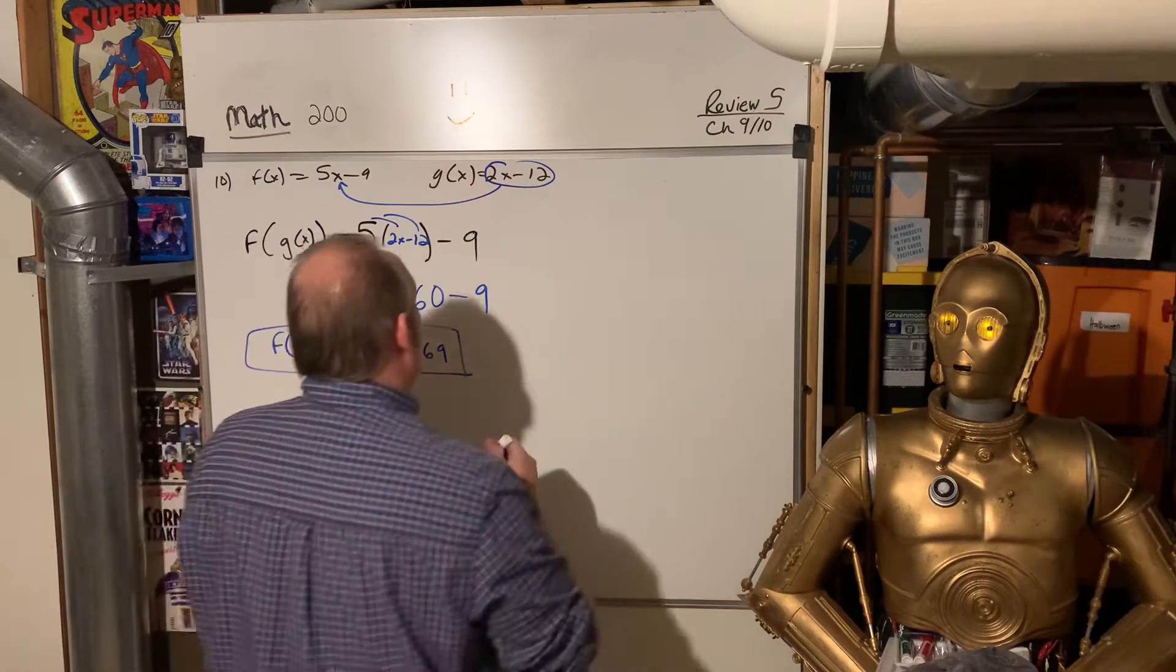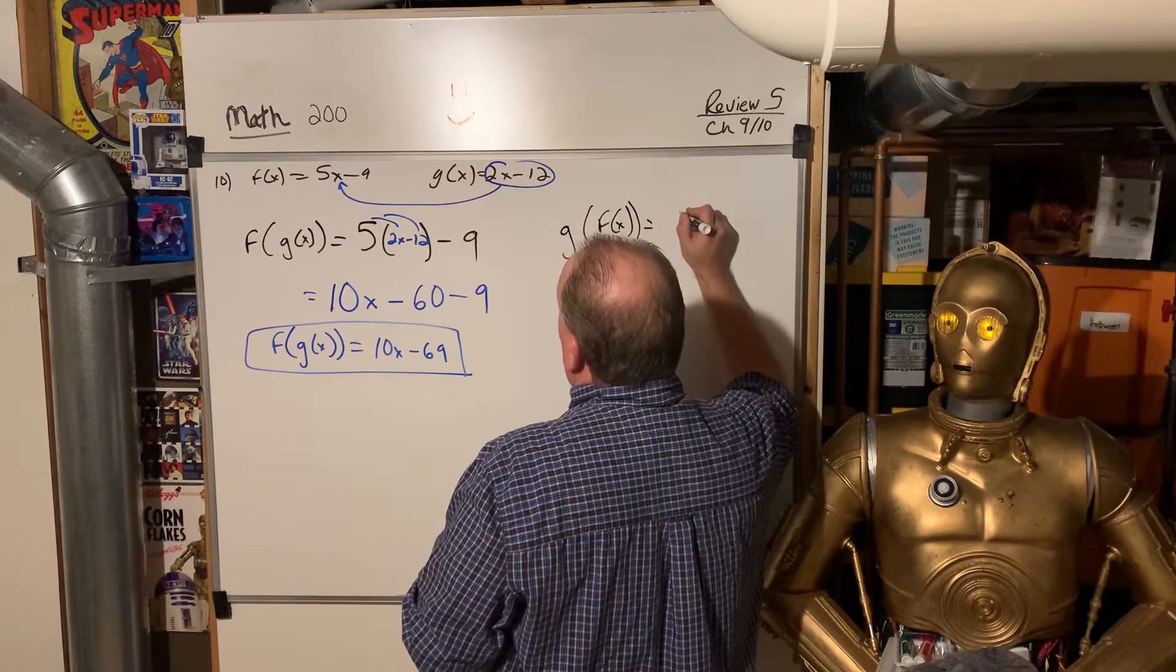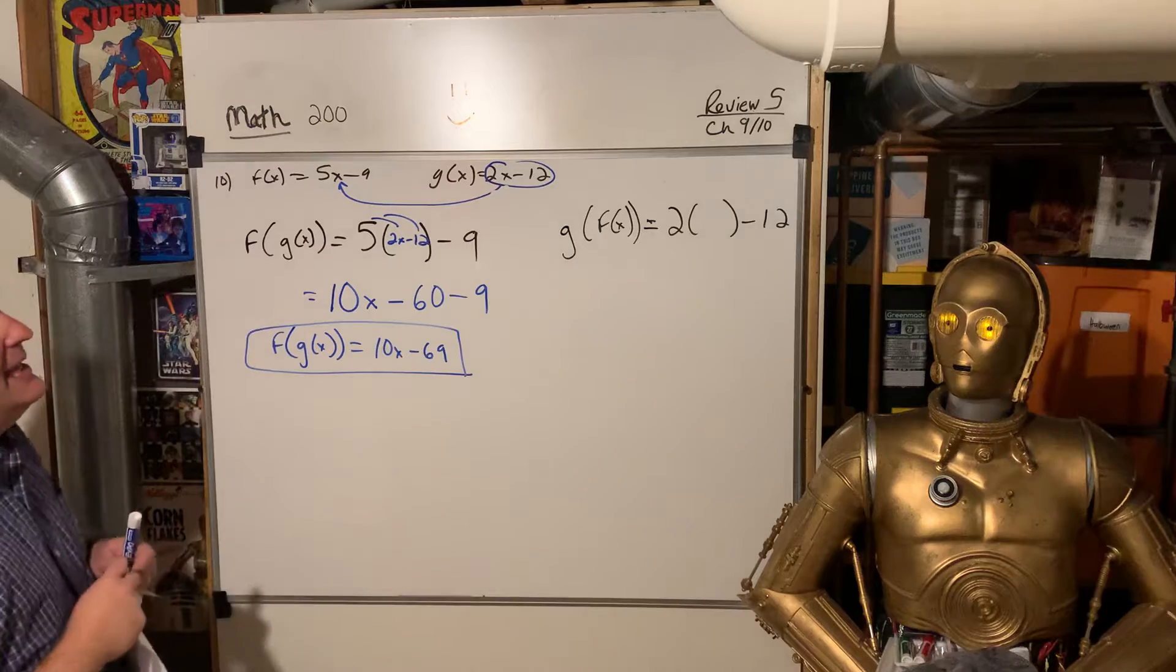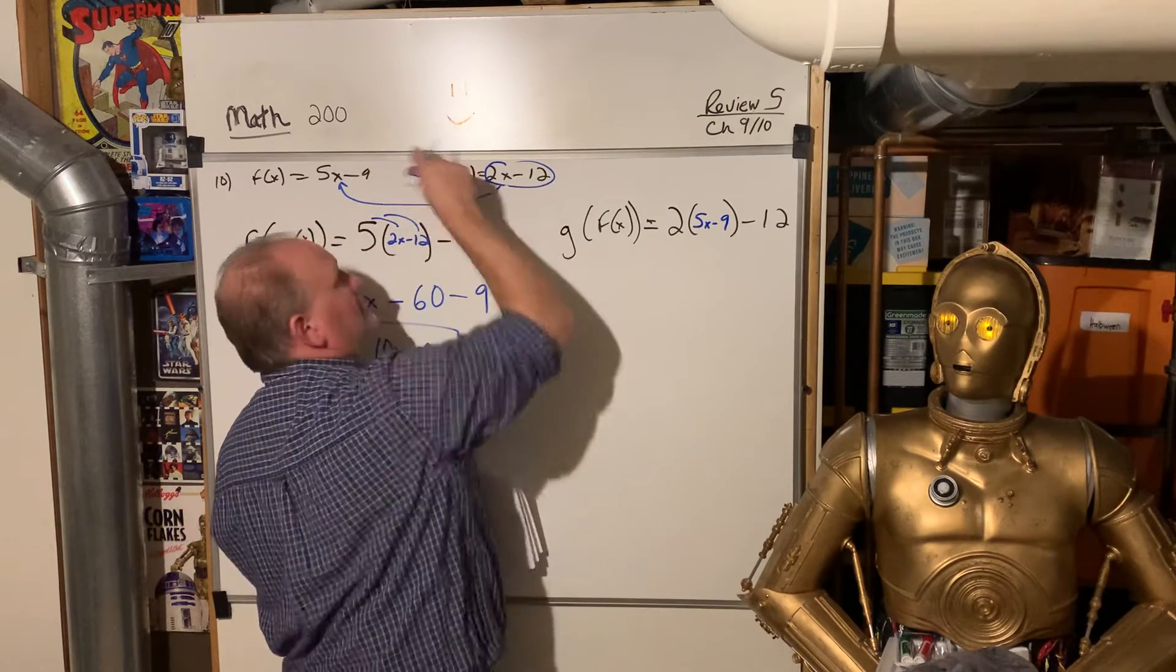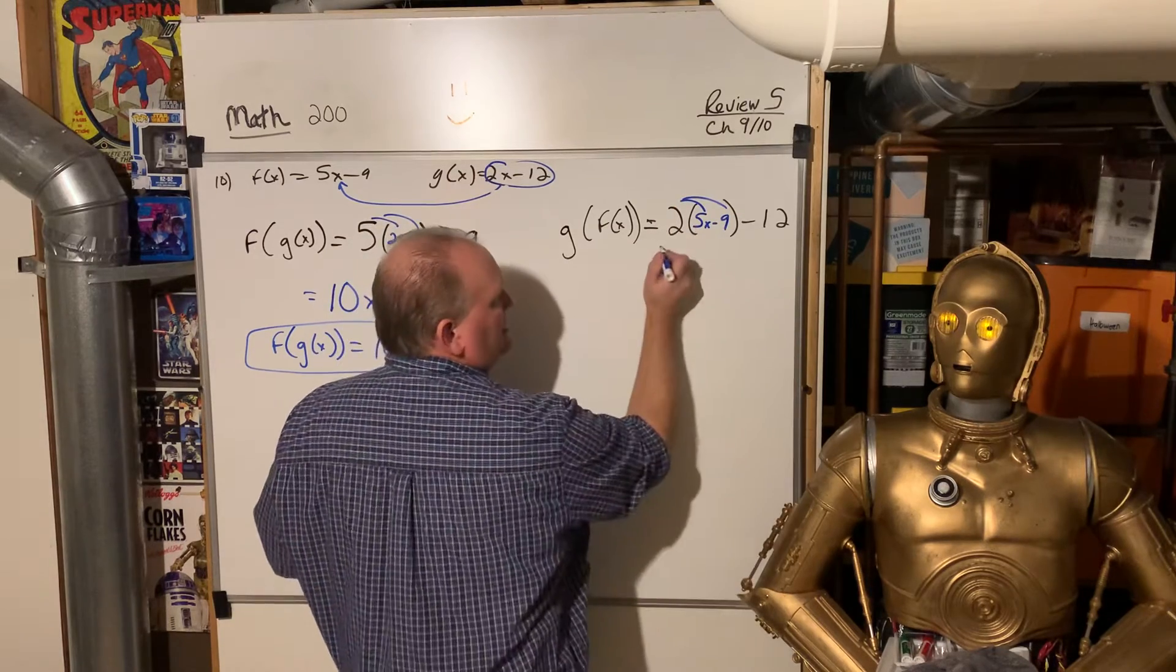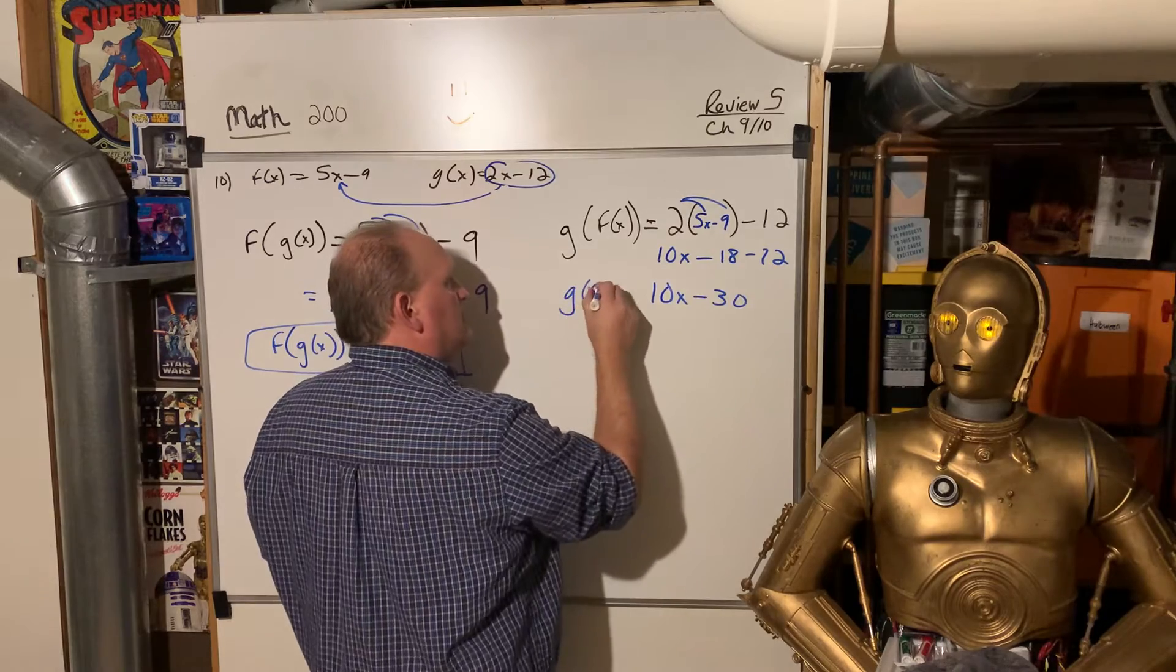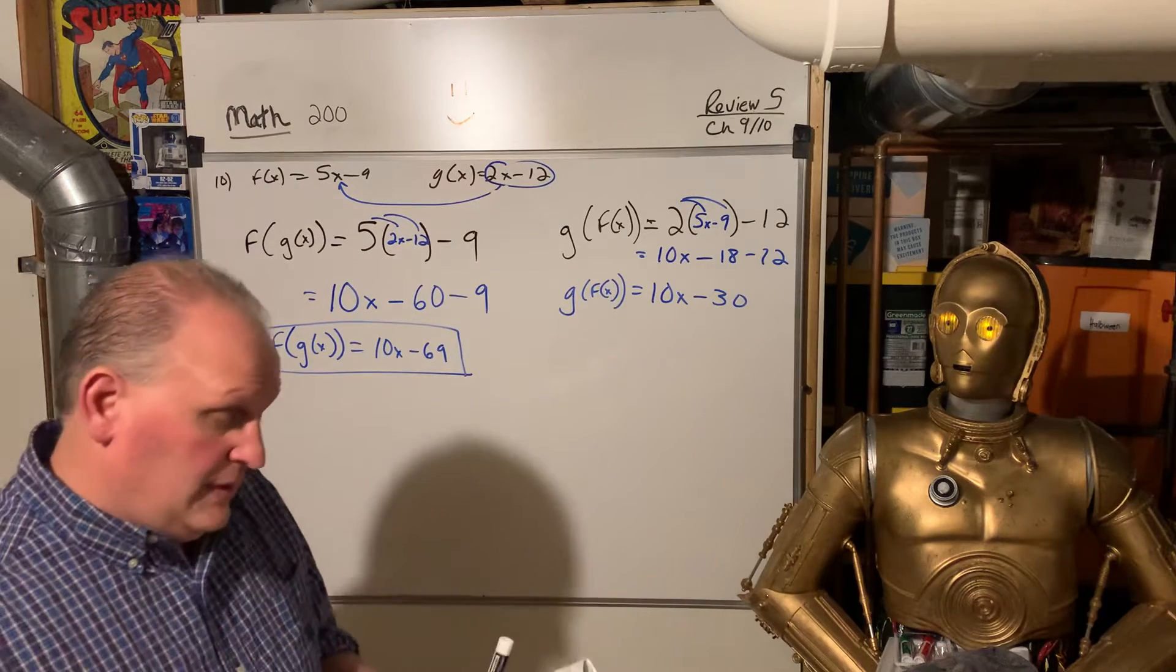Then to find the other way, g of f of x, you do a similar thing. Instead of 2x minus 12, we're going to insert the 5x minus 9 in for x. See, that's why it's called a nested function. That function is nested inside of this function. And now we figure out what that composite function is. That's the fancy way of saying simplified version. So 10x minus 30 is g of f of x.